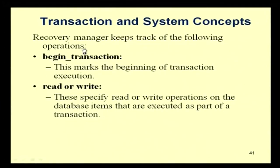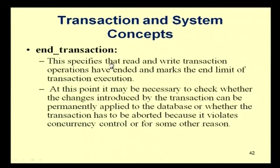At the end transaction point, it may be necessary to check whether the changes introduced by the transaction can be permanently applied to the database, or whether the transaction has to be aborted because it violates concurrency control. Commit transaction signals a successful end — any changes done as part of the transaction will be permanently stored. Abort signals that the transaction has ended unsuccessfully and its effects must be undone.